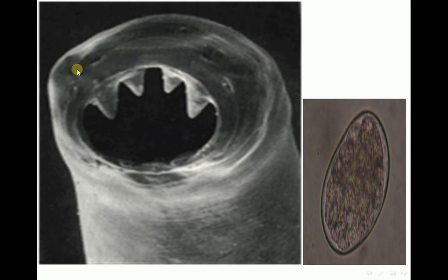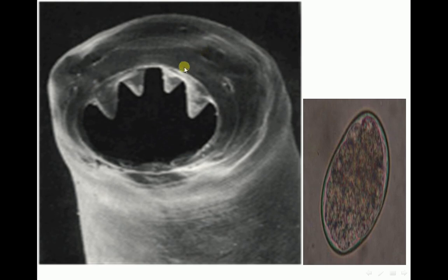The head of this parasite contains two pairs of teeth — referring to Ancylostoma duodenale.